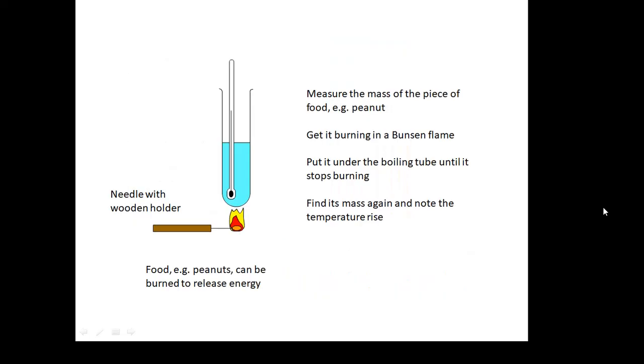If it's a solid fuel, such as food, it is a common experiment to find out how much energy food contains. You use a needle with a wooden holder. You set fire to the food, for example, it might be a peanut, in a Bunsen flame. Then you put it under the boiling tube until it stops burning. You measure its mass before and after, and you note the temperature rise.